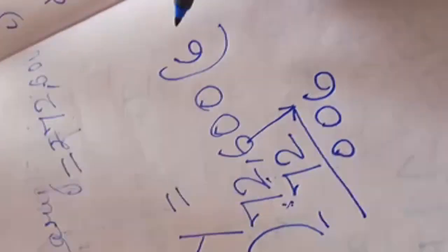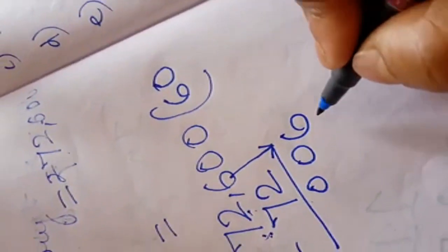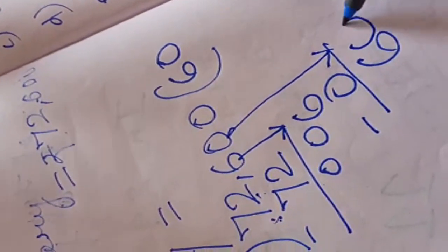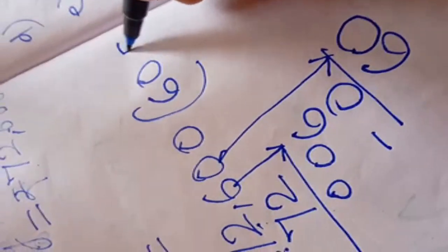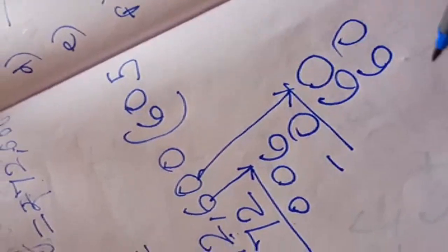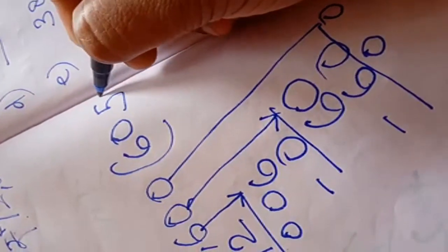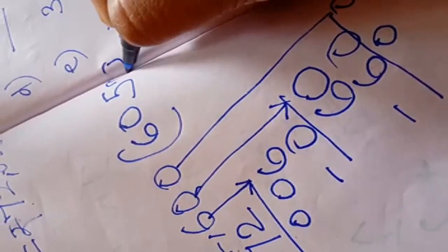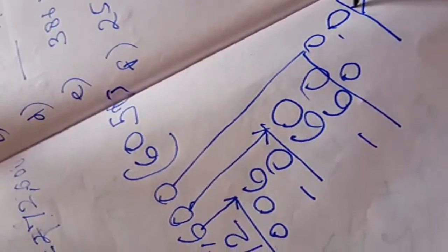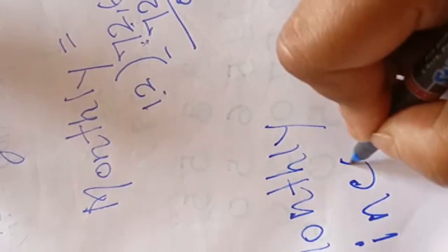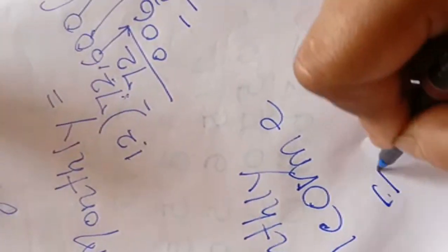6 is smaller than 12. So, we will multiply by 0. 12 zeros are 0, 6 minus 0 is 6. Then I will take 0 here, 60. In table 12, 12 fives are 60. Subtract, 0. Then 0 will come. 12 zeros are 0. So, his monthly income is equal to Rs 6,050.